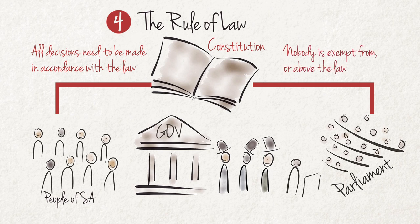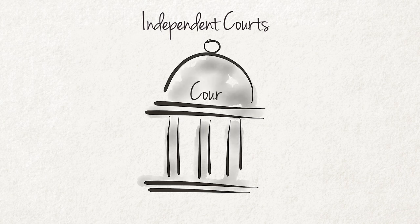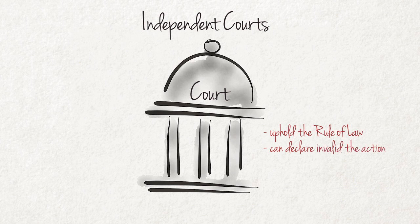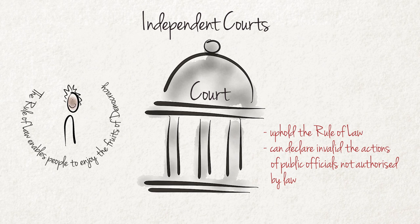Public officials cannot act arbitrarily and without being allowed to act by law, because under this system, citizens are protected from the arbitrary exercise of power. Independent courts uphold the rule of law. Only independent courts can find people guilty of committing a crime. Courts can also declare invalid the actions of public officials that are not authorized by law. A society in which the rule of law is not protected would be unpredictable and the human rights of its citizens would not be guaranteed. The correct application of the rule of law enables citizens to enjoy the benefits of democracy.